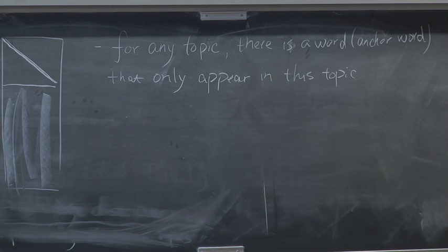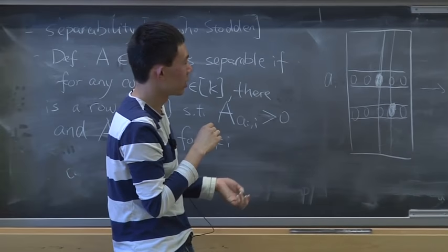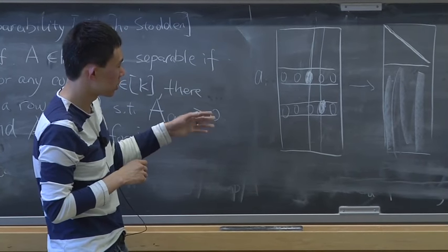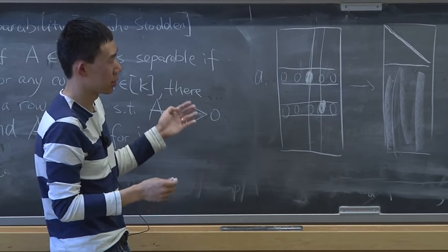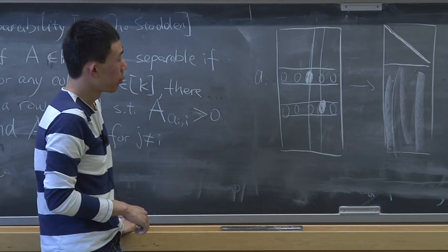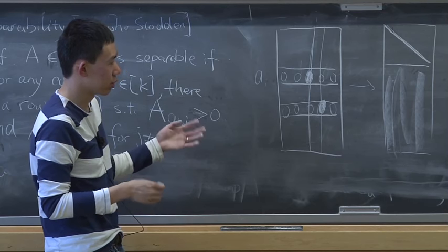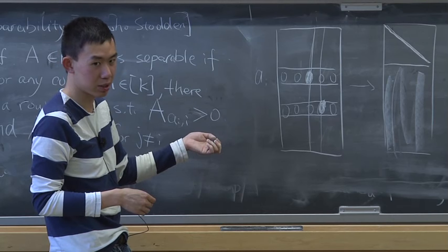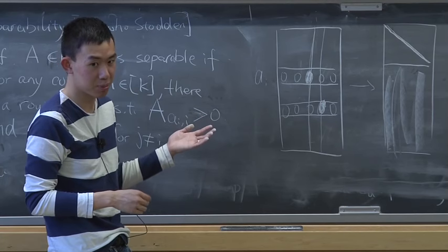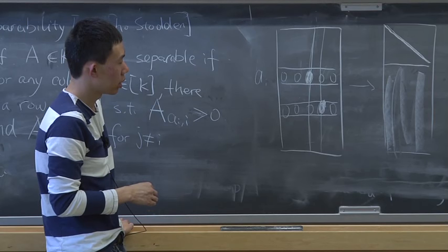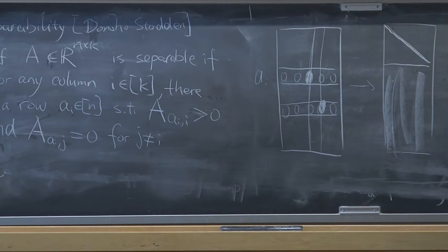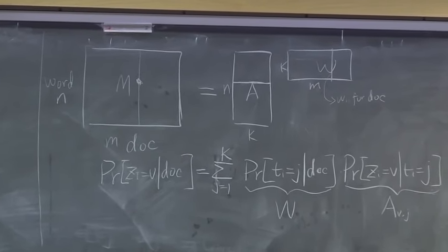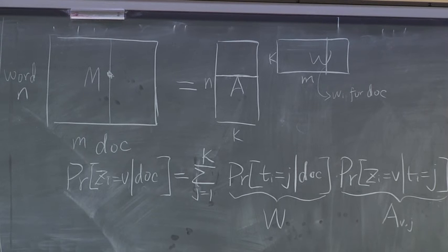Intuitively, this assumption should help in learning a topic model because if we see an anchor word in a particular document, then at least some fraction of the document must be talking about that particular topic. And that could be very useful. Now let's look at how this helps with M = A × W when A is separable.